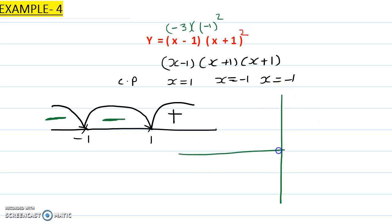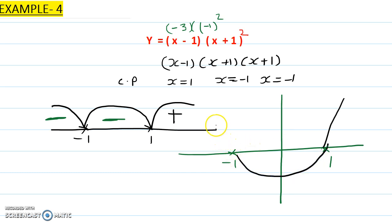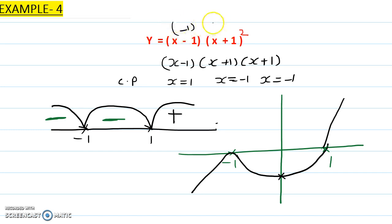Now let's do the sketching. The critical points are -1 and 1. After x=1 it is positive, so the graph starts from the top. Between 1 and -1 it is negative. After -1 it is negative again, so the curve touches and turns at x=-1 rather than crossing. To find the y-intercept, put x=0: (0-1)(0+1)² = (-1)(1) = -1. So the coordinate of that point is (0, -1).